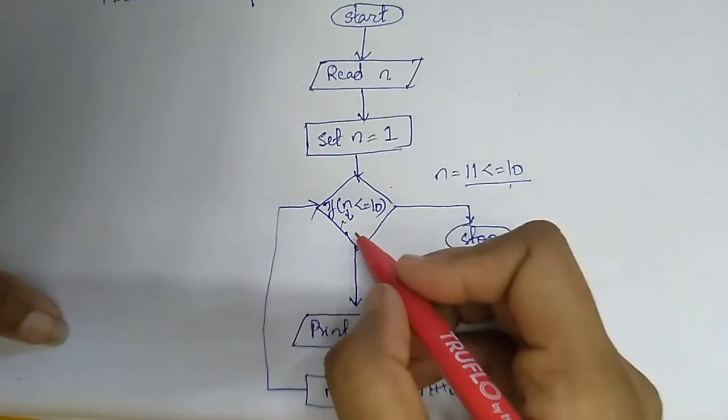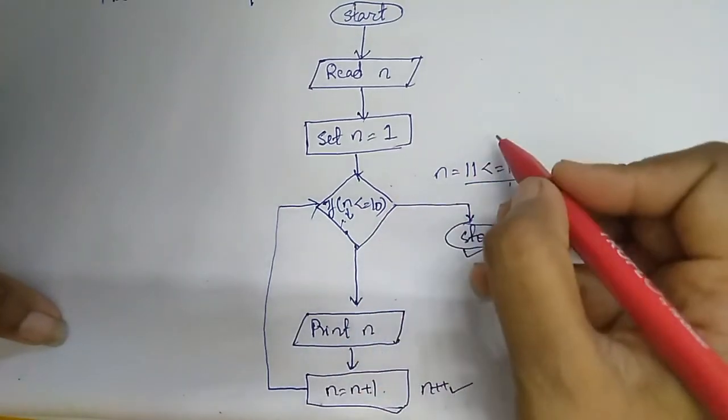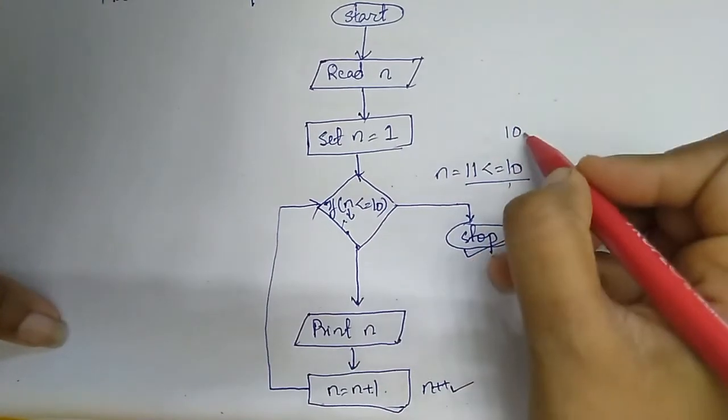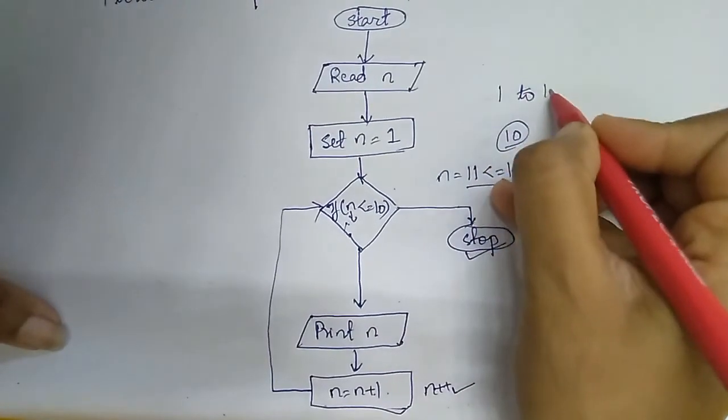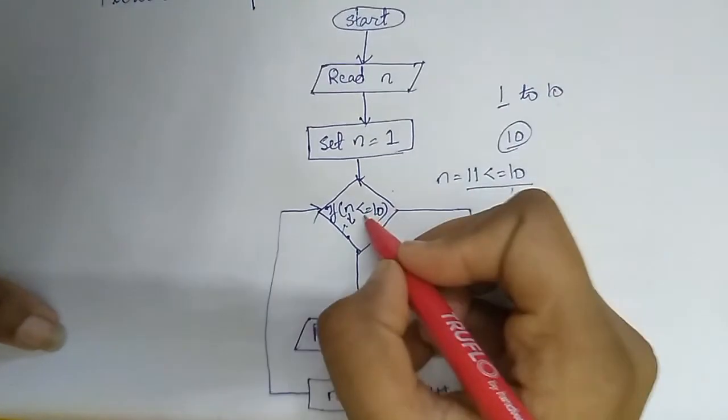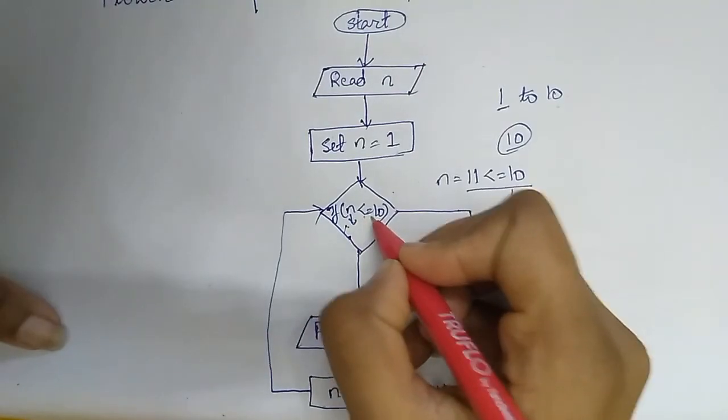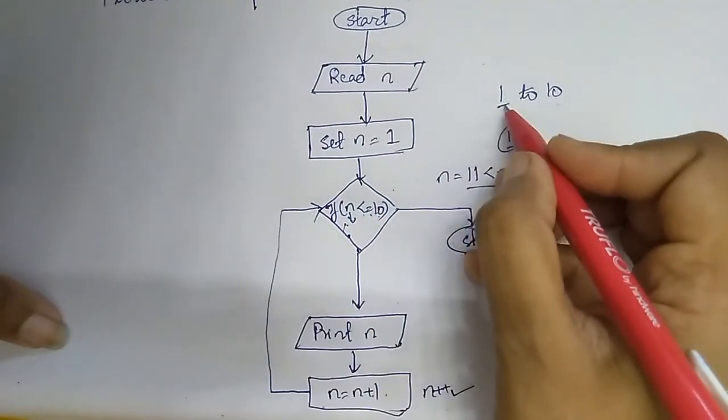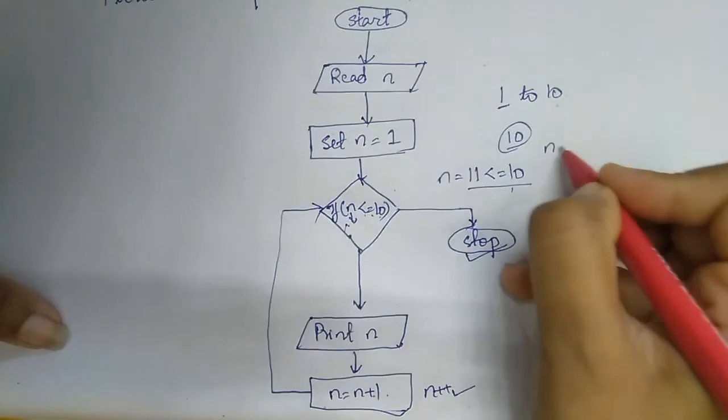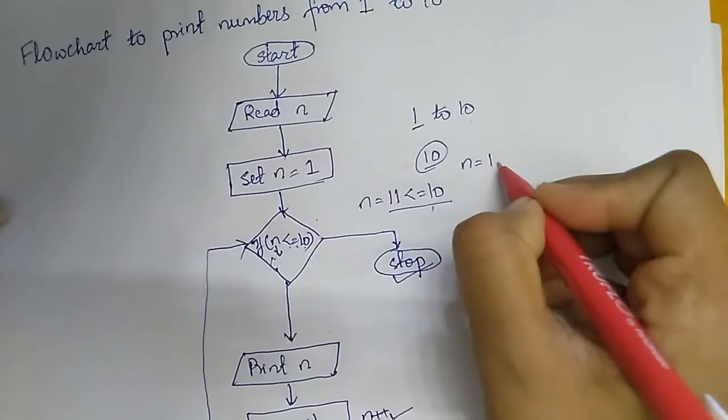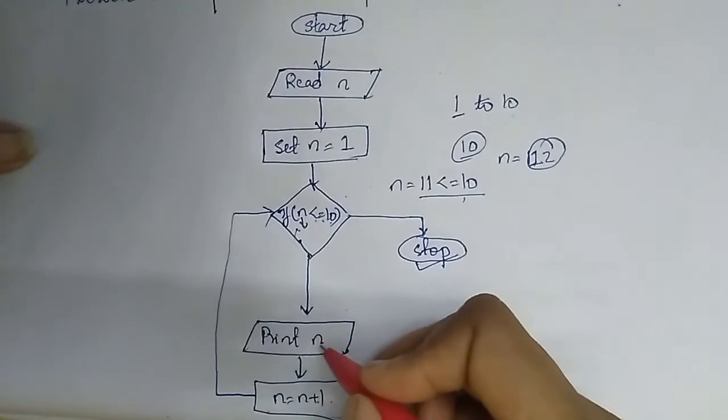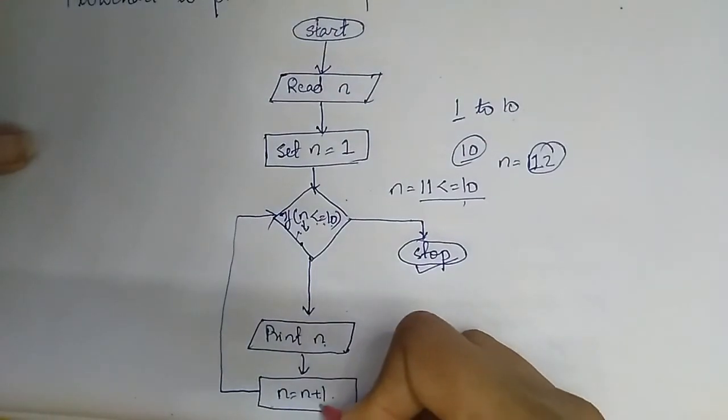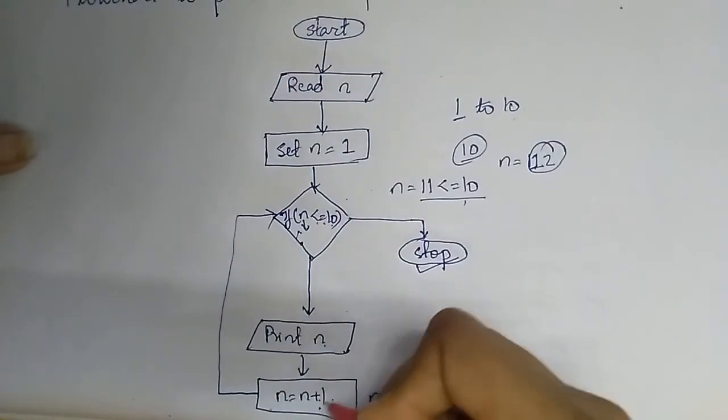And this is repeating the process 10 times, from checking the number 1 to 10. We are checking this n less than equals to 10, 10 times for 10 values, 1 to 10. And how this value is getting incremented? Because we are printing and again we are adding 1 to it.